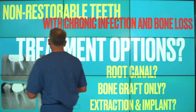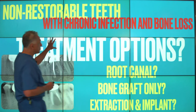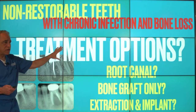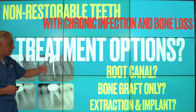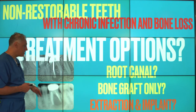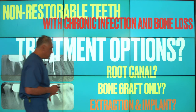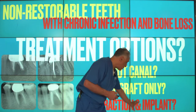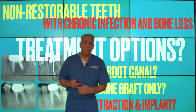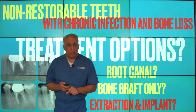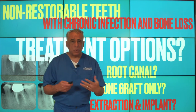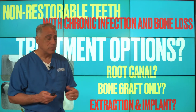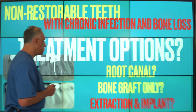So when it comes to managing patients with chronic infection and an extensive amount of bone loss, in the majority of cases, extraction and replacement with an implant is probably the most predictable way to treat them.